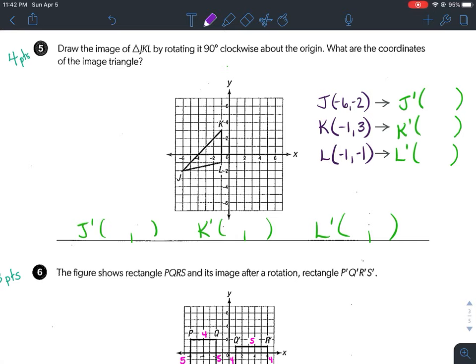Okay, so it says draw the image of triangle JKL by rotating 90 degrees clockwise about the origin. What are the coordinates of the image triangle?